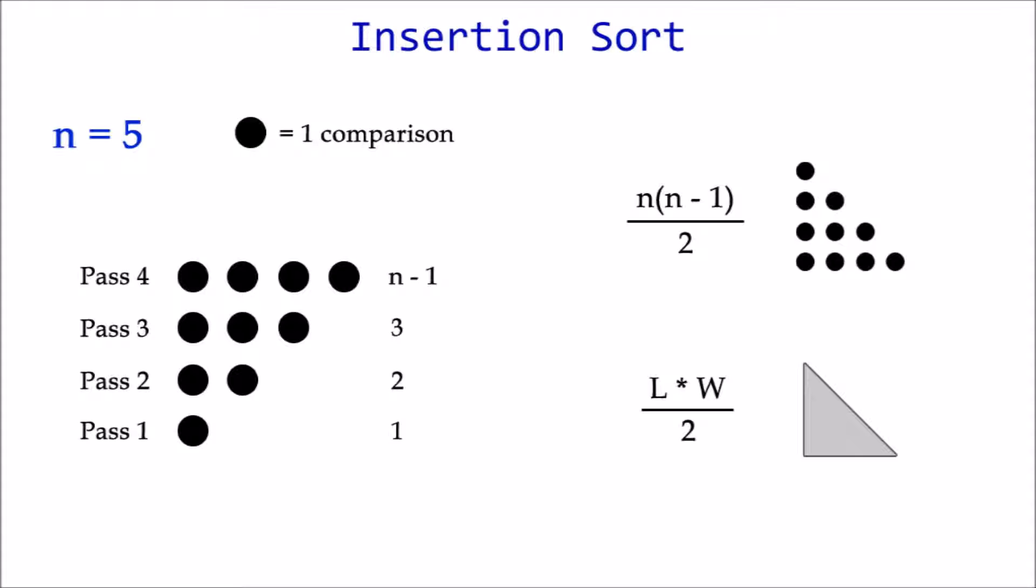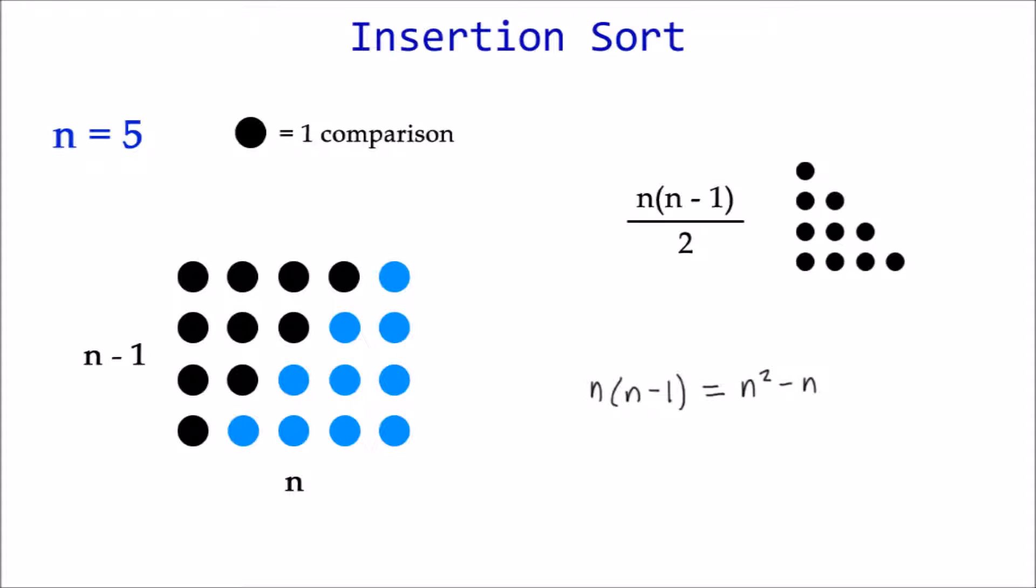To walk through this formula visually, first duplicate the triangle and position it so that it forms a rectangle with the other one. Now you can see a representation of n and n minus 1 in the formula. n minus 1 is the number of passes. After multiplying, we get n squared minus n. Divide that by 2 to get the area of the triangle.